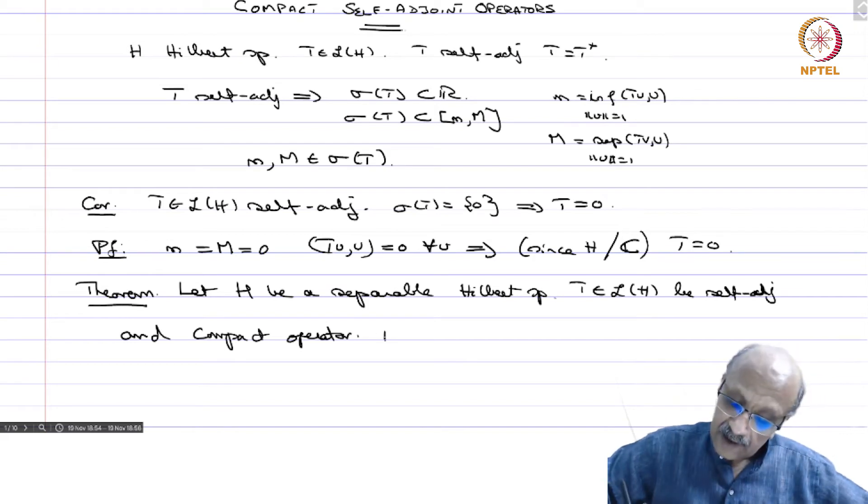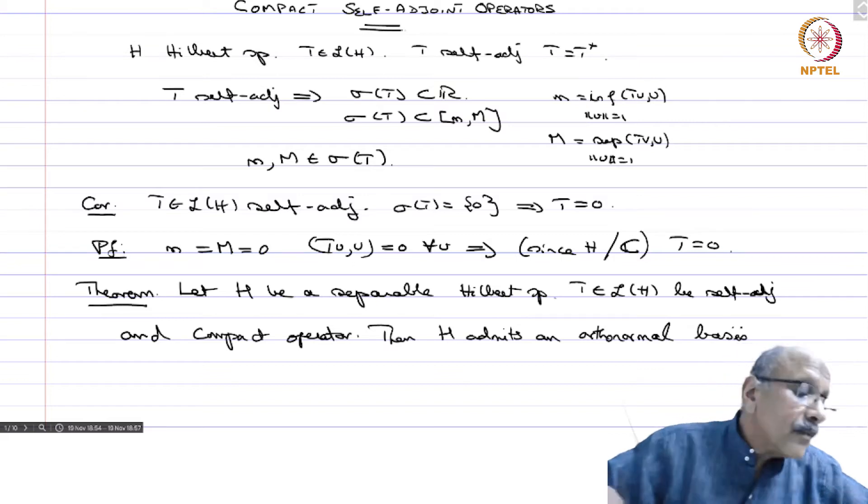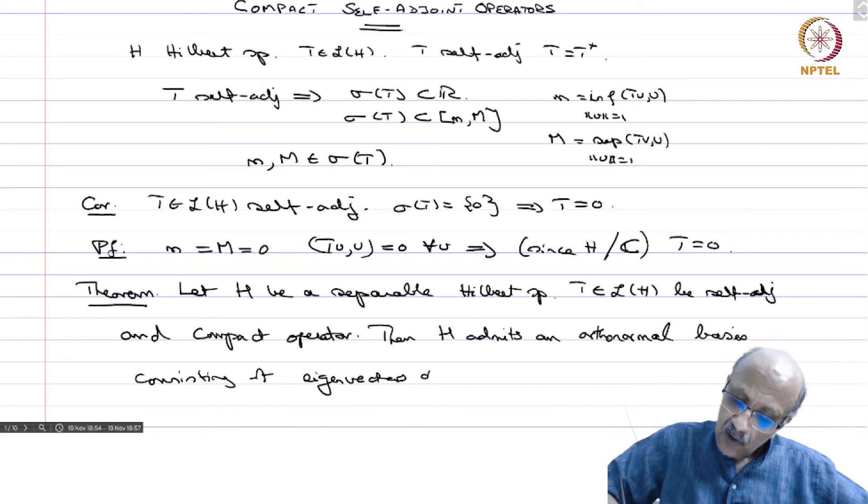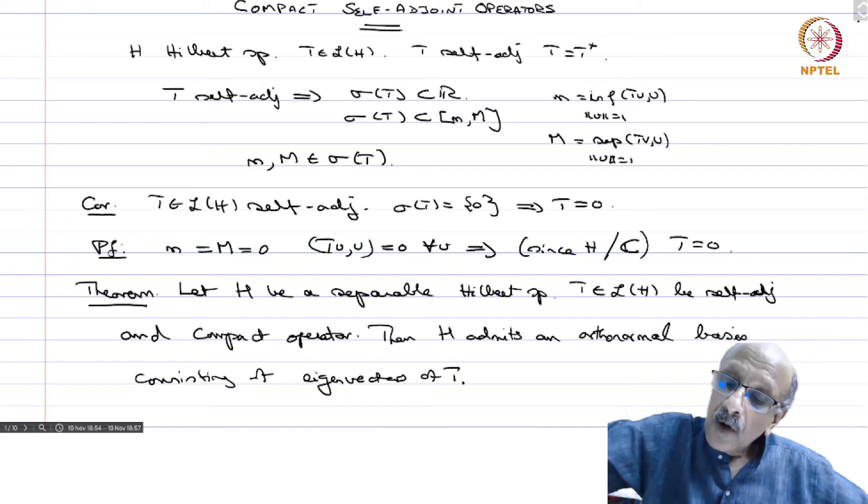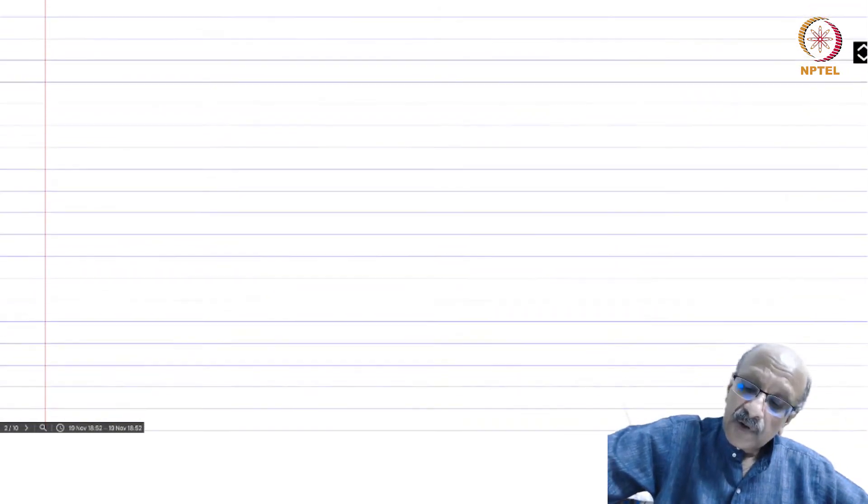Then H admits an orthonormal basis consisting of eigenvectors of T. And of course, it is obviously countable because H is a separable Hilbert space.